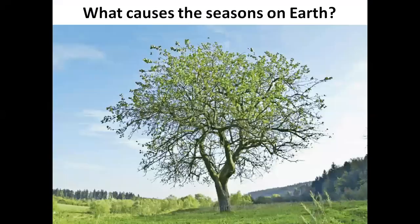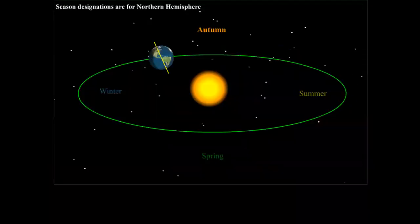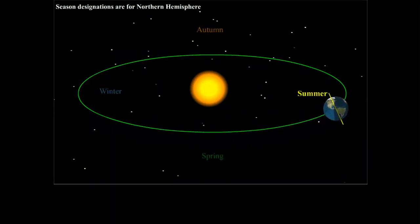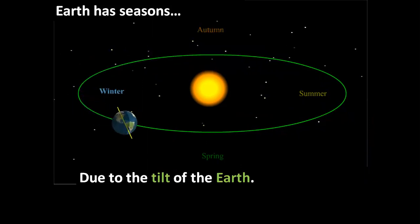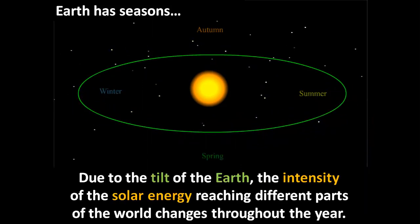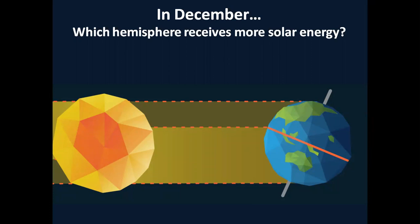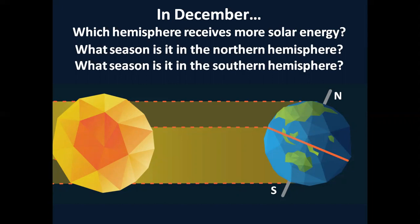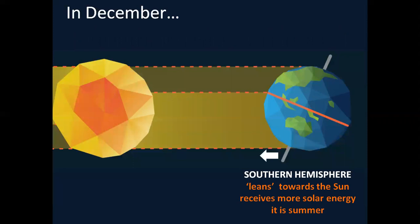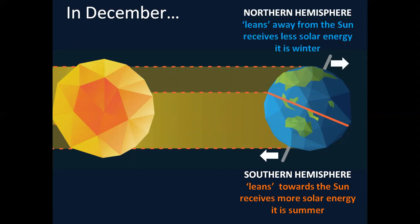What causes the seasons on Earth? The Earth has seasons due to the tilt of the Earth. Due to the tilt of the Earth, the intensity of the solar energy reaching different parts of the world changes throughout the year. In December, the southern hemisphere leans towards the sun, receives more solar energy, and it is summer. The northern hemisphere leans away from the sun, receives less solar energy, and it is winter.